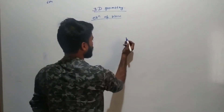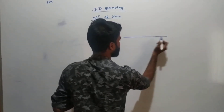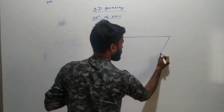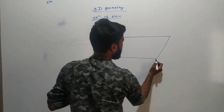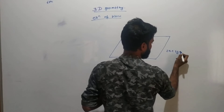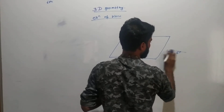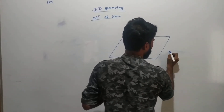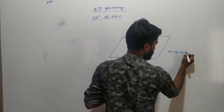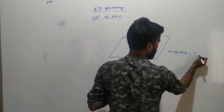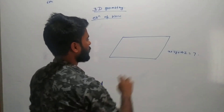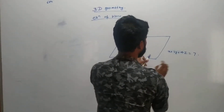The question is: suppose z is a plane and the equation of this plane is x plus 3y plus 4z is equal to 7. This is the given equation of the plane.